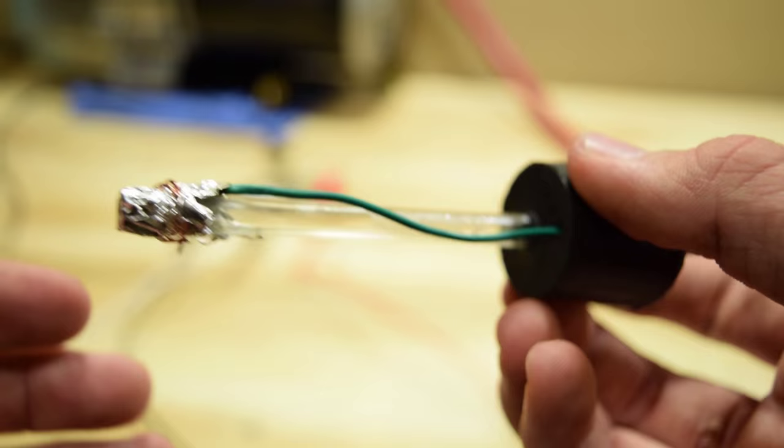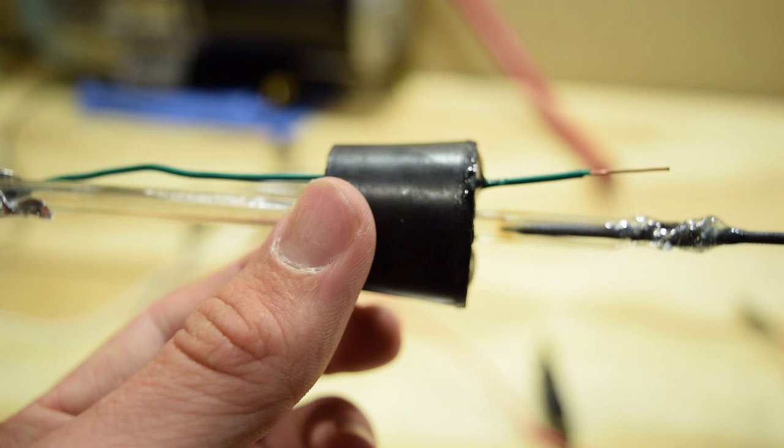The anode is simply a piece of aluminum foil wrapped around the end of a glass tube with a hole poked in it. It is connected to the top of the stopper with a wire.